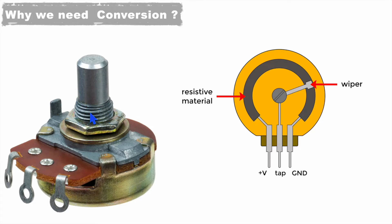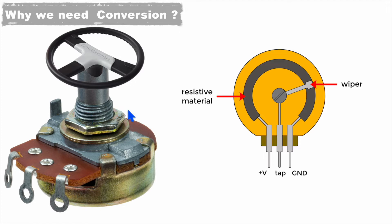Just think about this potentiometer being connected to the steering of a vehicle. Whenever we rotate the steering, it will change the wiper position of the potentiometer and give different voltage drops for different positions of the steering. So the position of the steering can be determined by knowing the voltage drop across this potentiometer. Normally this control has to go into a microcontroller, and a microcontroller always takes data in binary form, not in analog form.